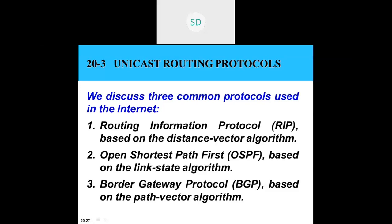Unicast routing protocol. In this section we will be discussing the 3 common protocols used in the internet: Routing Information Protocol (RIP) based on the distance vector algorithm, Open Shortest Path First (OSPF) based on the link state algorithm, and Border Gateway Protocol (BGP) based on the path vector algorithm. In this class we will be discussing the first one, Routing Information Protocol.